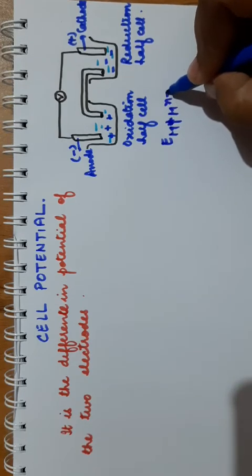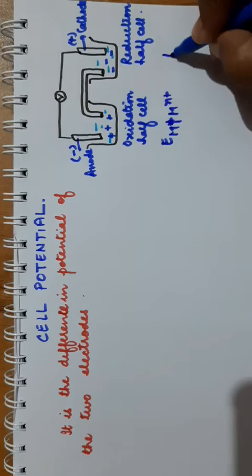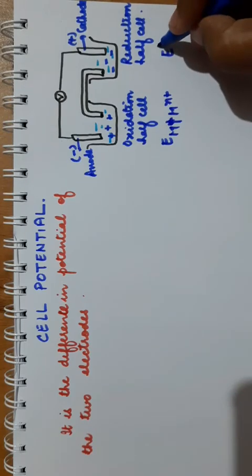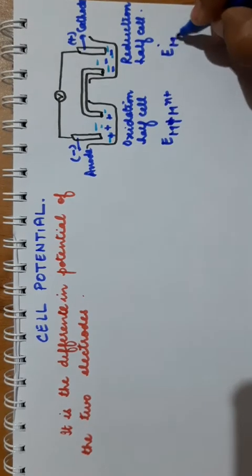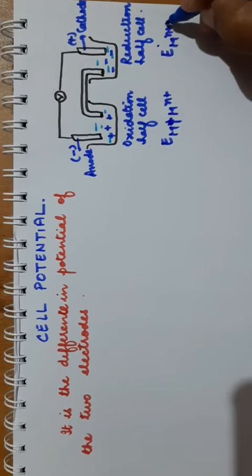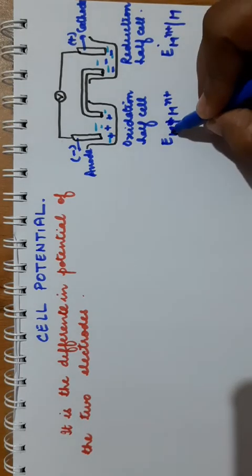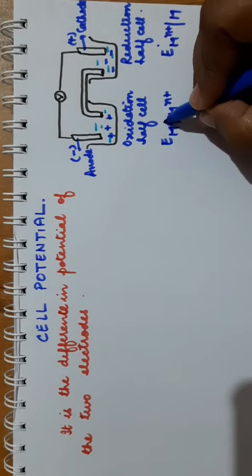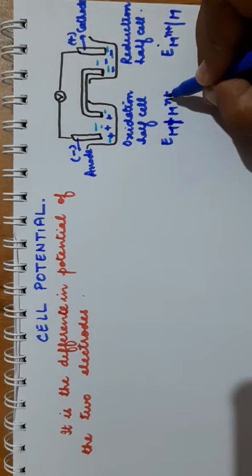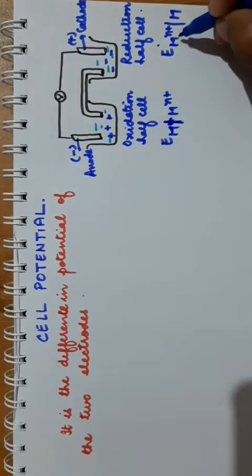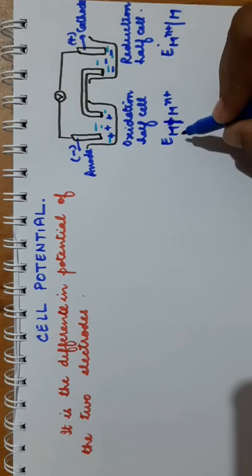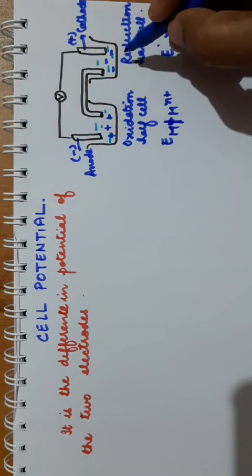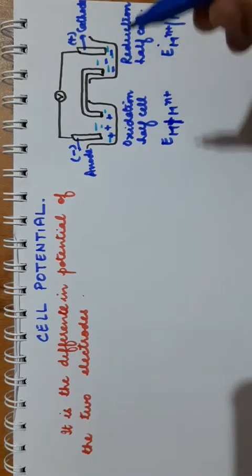This is oxidation potential and this is reduction potential. Oxidation is taking place: metal to Mⁿ⁺, and Mⁿ⁺ to M. So in E cell there is an electrode potential.